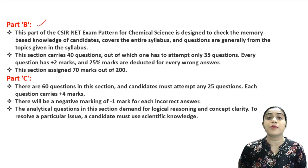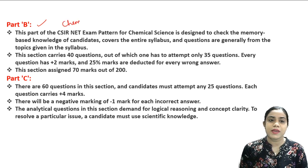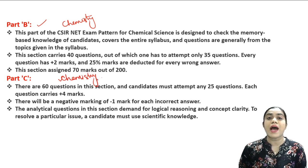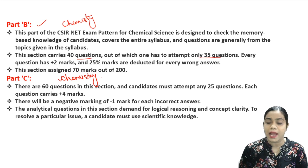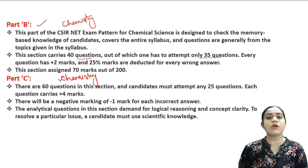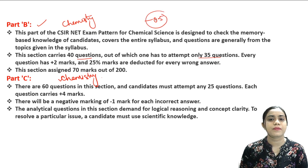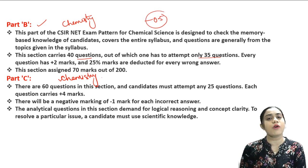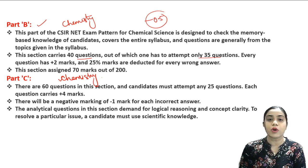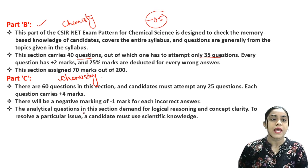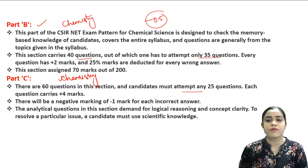Part B of the CSIR NET exam is designed to check the memory-based knowledge of the candidate and is purely chemistry-based. In Part B, 40 questions are given and you have to attempt any 35 questions. Each question in Part B carries two marks, and there is also negative marking of minus 0.5. If your concepts are clear, attempt confidently; otherwise select carefully because of the negative marking.